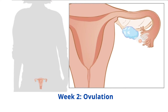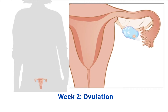Week 2 - Ovulation: once a month, in response to hormones, one of the ovaries expels a mature egg. This happens about mid-cycle. The lining of the uterus is becoming thick again in order to receive a fertilized egg.